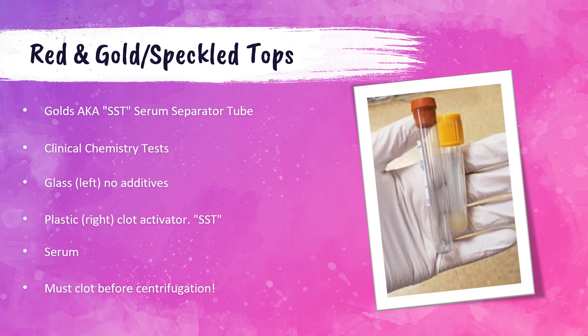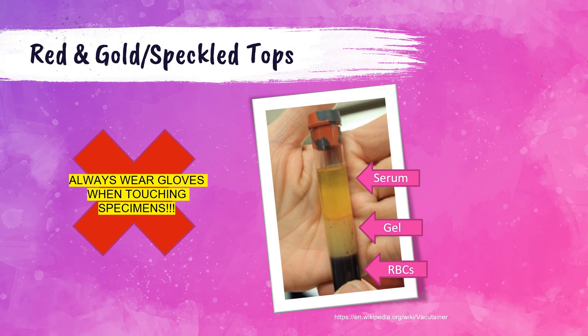Next we have the red, gold, and red-black speckled top tubes. The red top on the left is made of glass and has no additives in it. The gold top on the right is often called an SST or serum separator tube — at the bottom there is a small amount of gel that separates the serum from the blood after centrifugation. The gold top has a clot activator and must clot before it is centrifuged. It is used for chemistry testing and produces serum, which is the liquid portion of the blood left over after clotting.